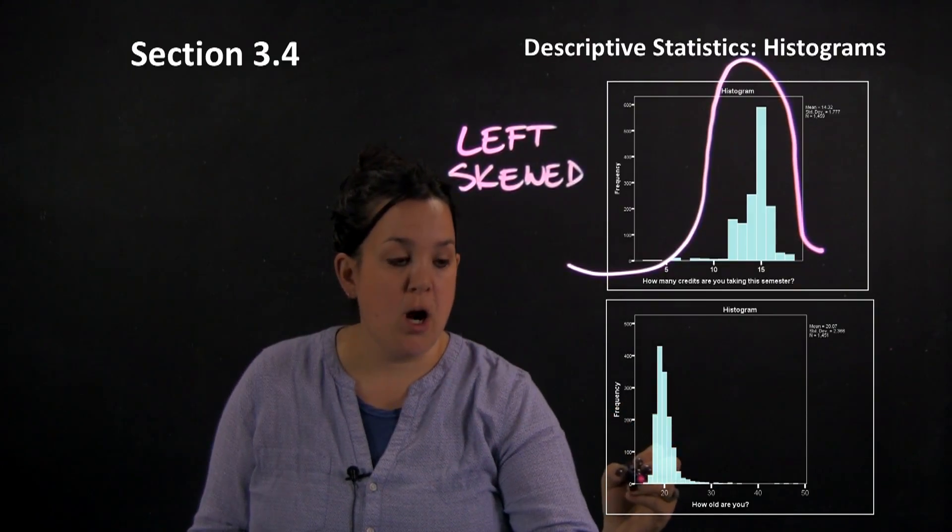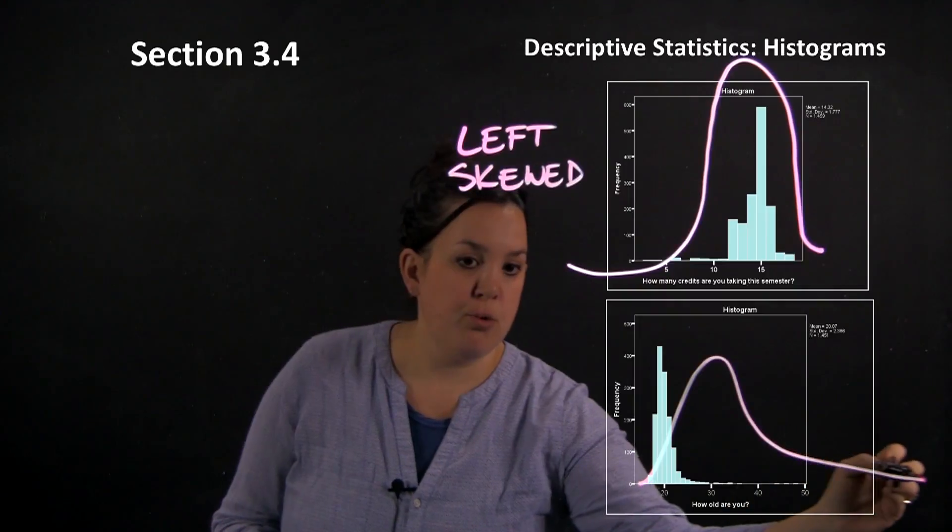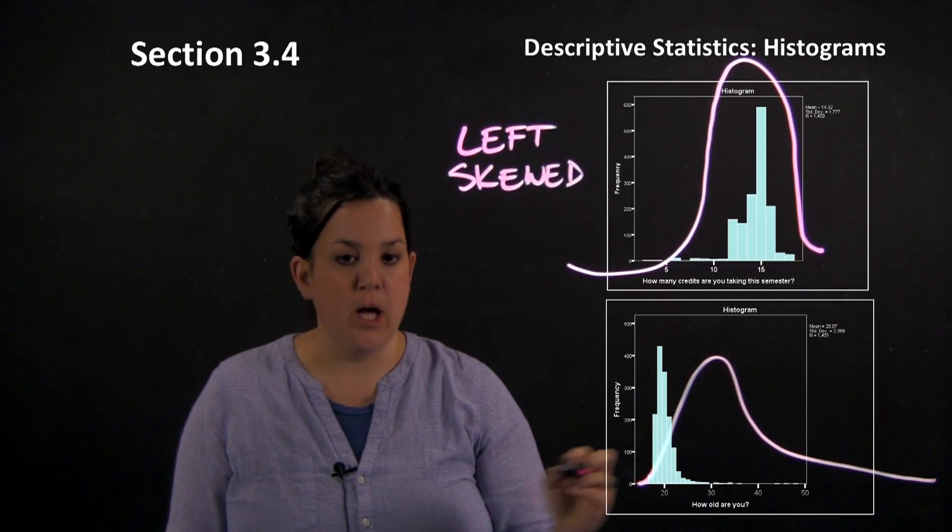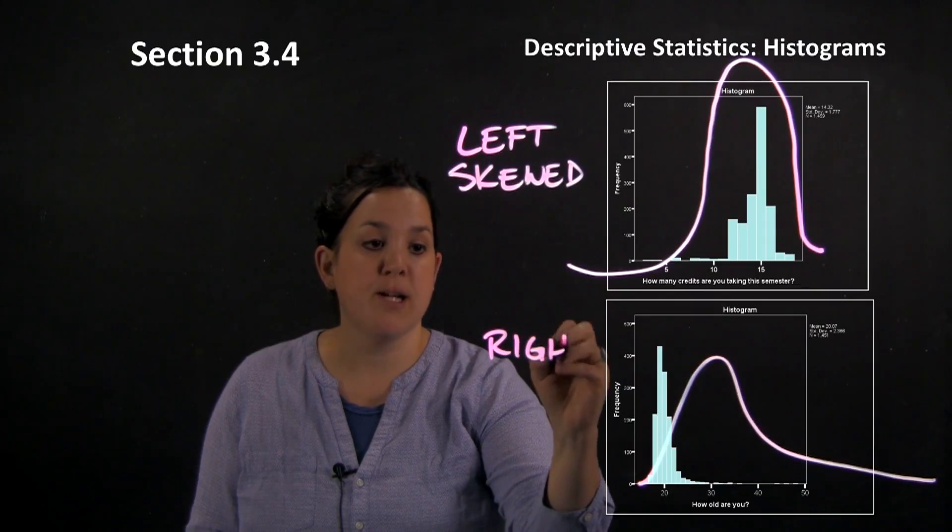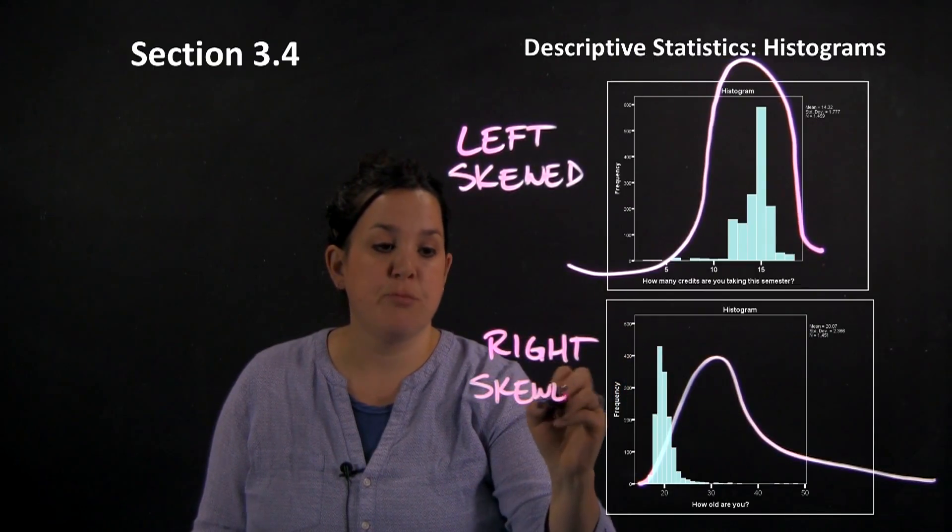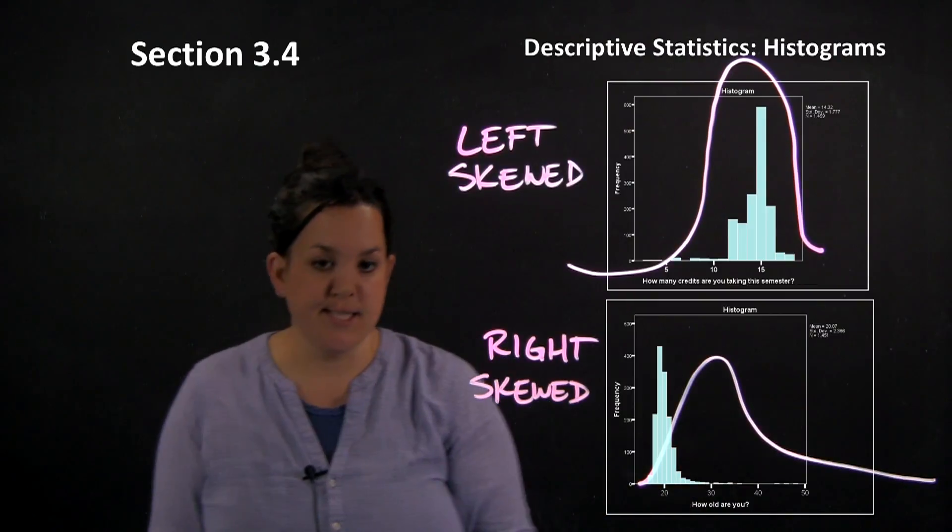Similarly down here, oops, a little off but you get the idea, this is going to be called right-skewed because the tail or drag of the distribution is happening on the right-hand side.